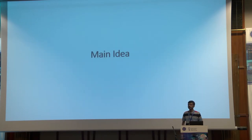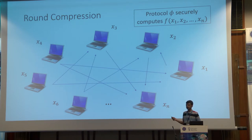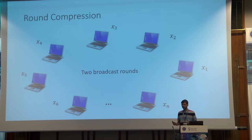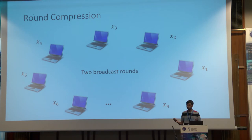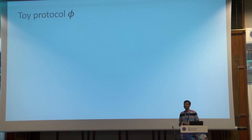Let me get to the main idea, which is round compression. We take an arbitrary round protocol that securely computes a function, and we compress the round complexity to just two rounds. This might sound counterintuitive — how can we possibly compress an arbitrary round protocol without affecting its correctness or security? To explain this, I will first consider a very simple toy protocol that computes a simple functionality and show how to compress its round complexity. Later I will generalize to compressing arbitrary computation protocols.